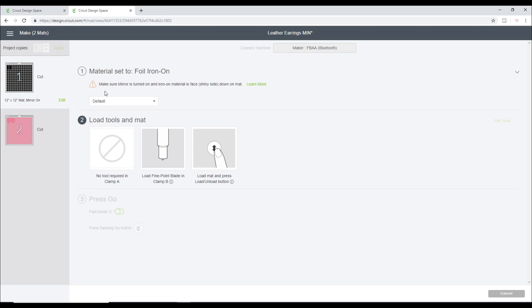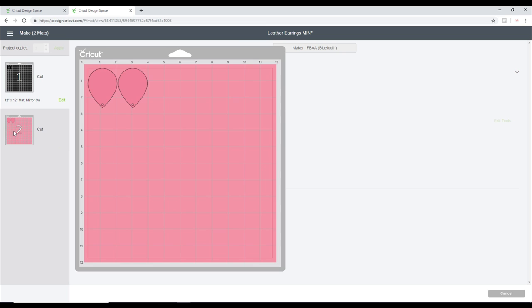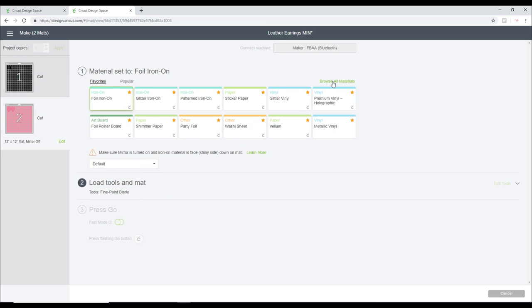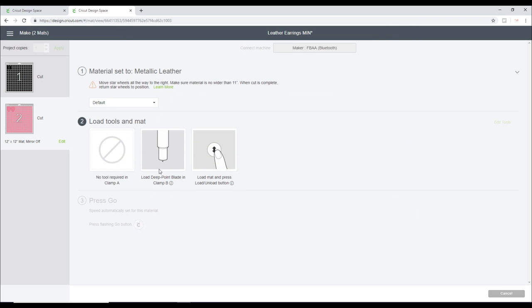For layer two, I'm going to browse all materials, come down to Leather, and select Metallic Leather. You can see it's got the Cricut symbol next to it so we know it's a Cricut product. We can then press Done and it will tell us to make sure that we've got our deep point blade.